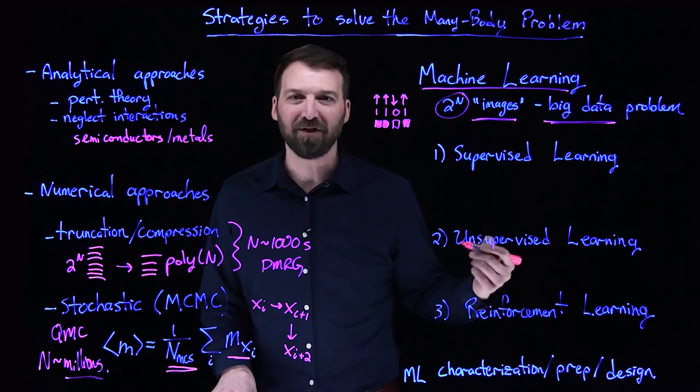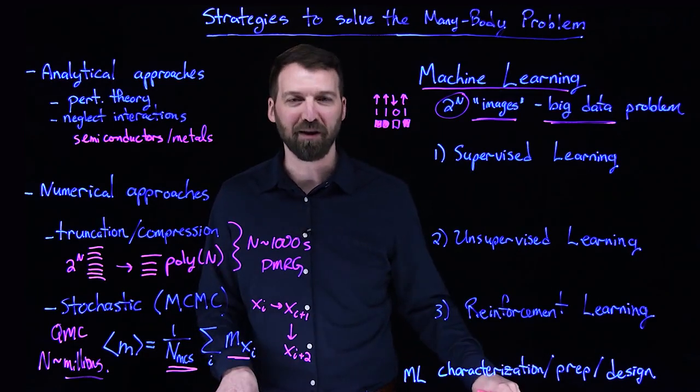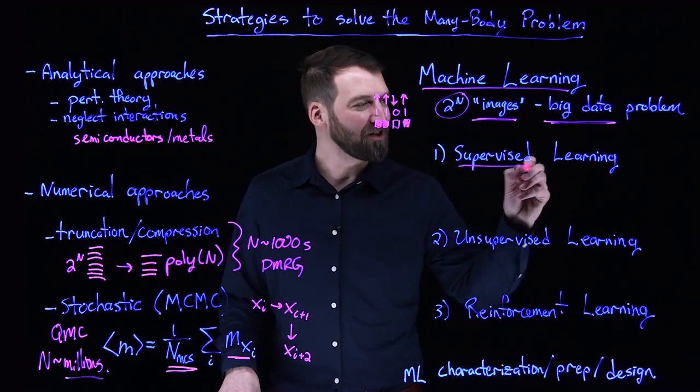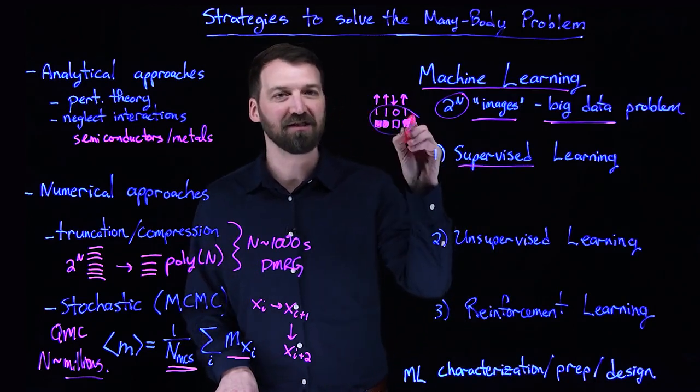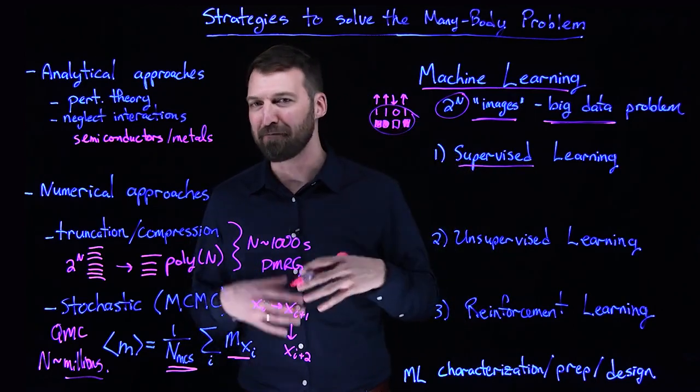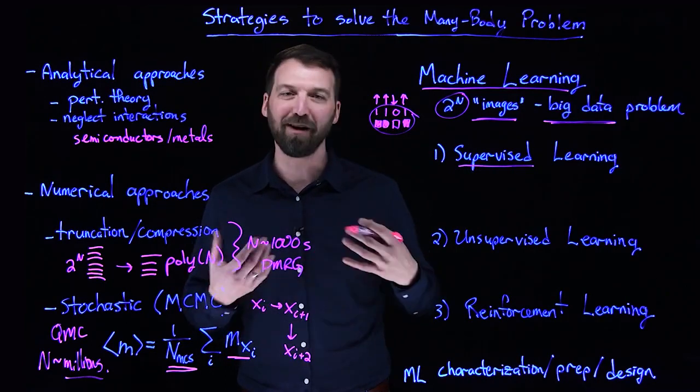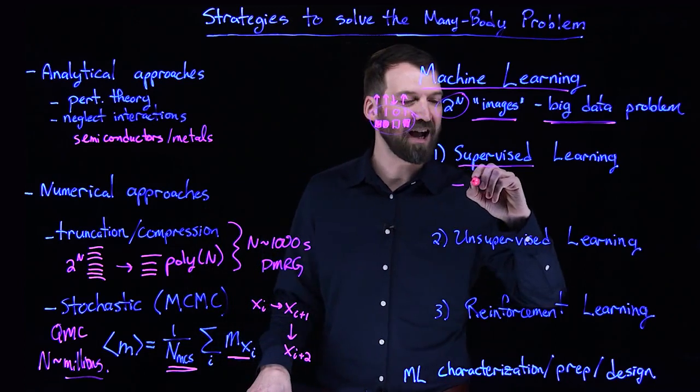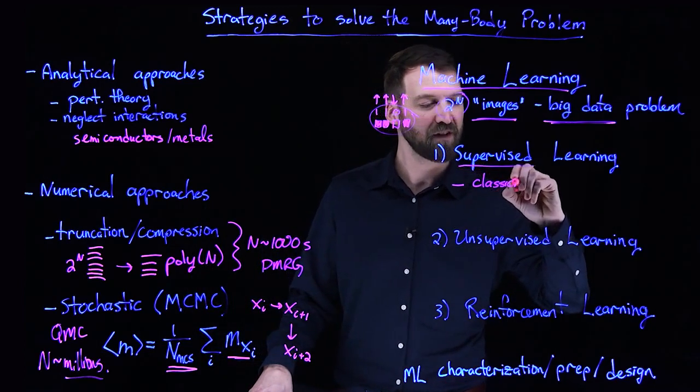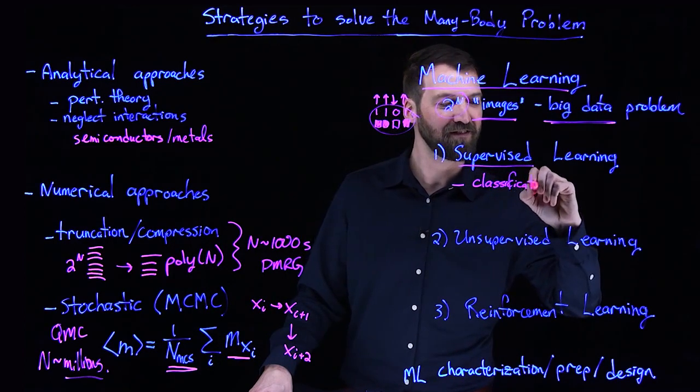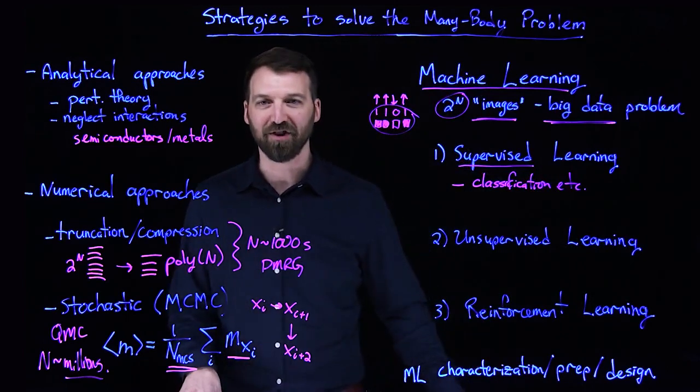There's various different strategies that we're used to employing in machine learning that we can turn to the quantum many-body problem. Supervised learning is when we have data with labels. So if we can take configurations and label them, say ferromagnetic, paramagnetic, quantum error correcting, or whatever, then we can essentially do many tasks in classification with supervised learning techniques.